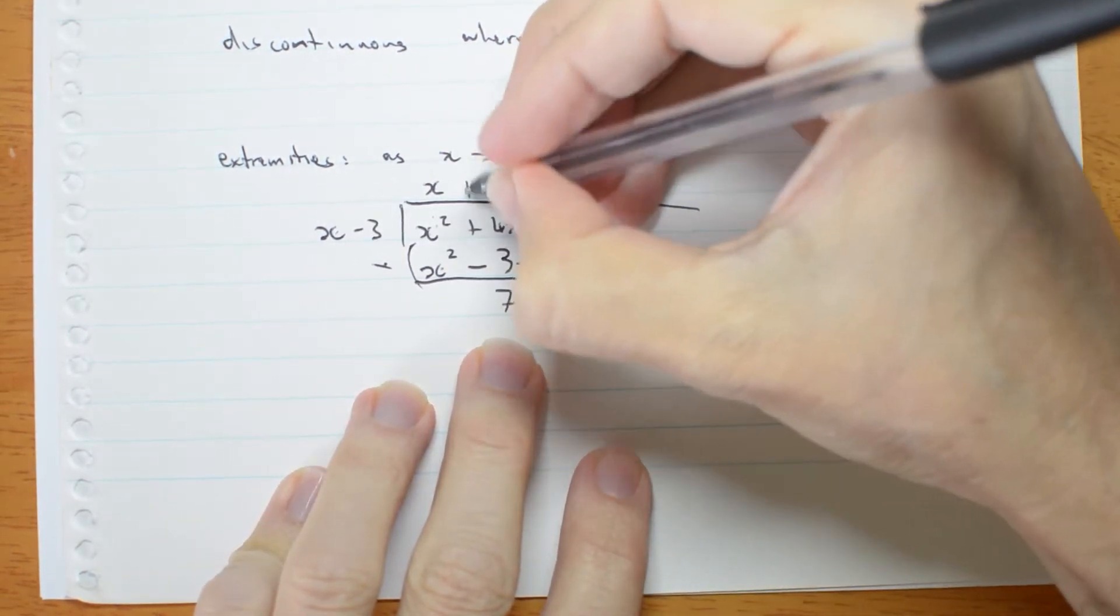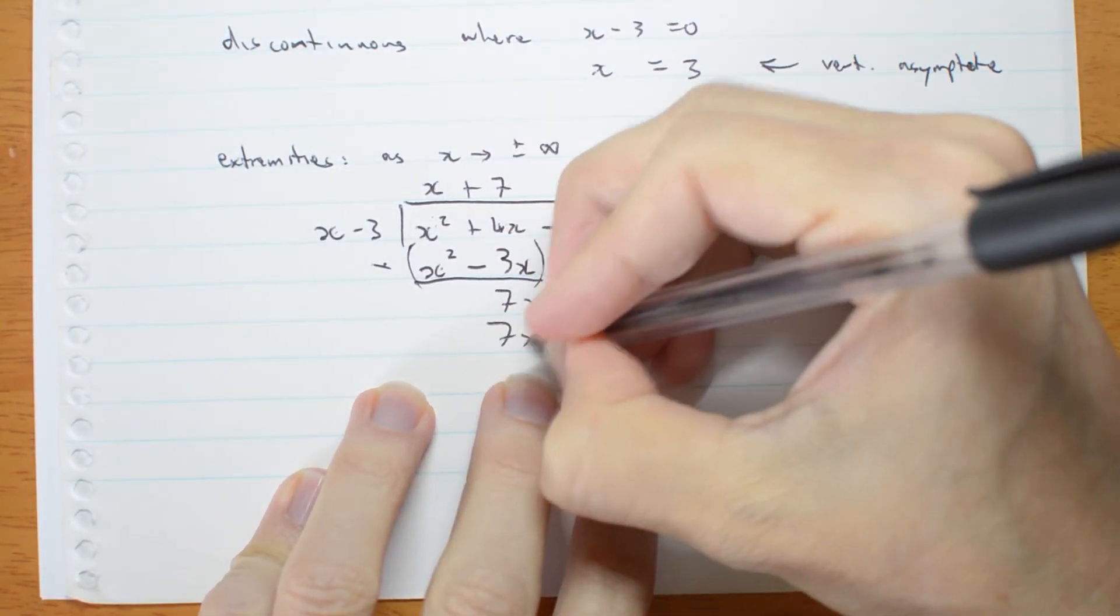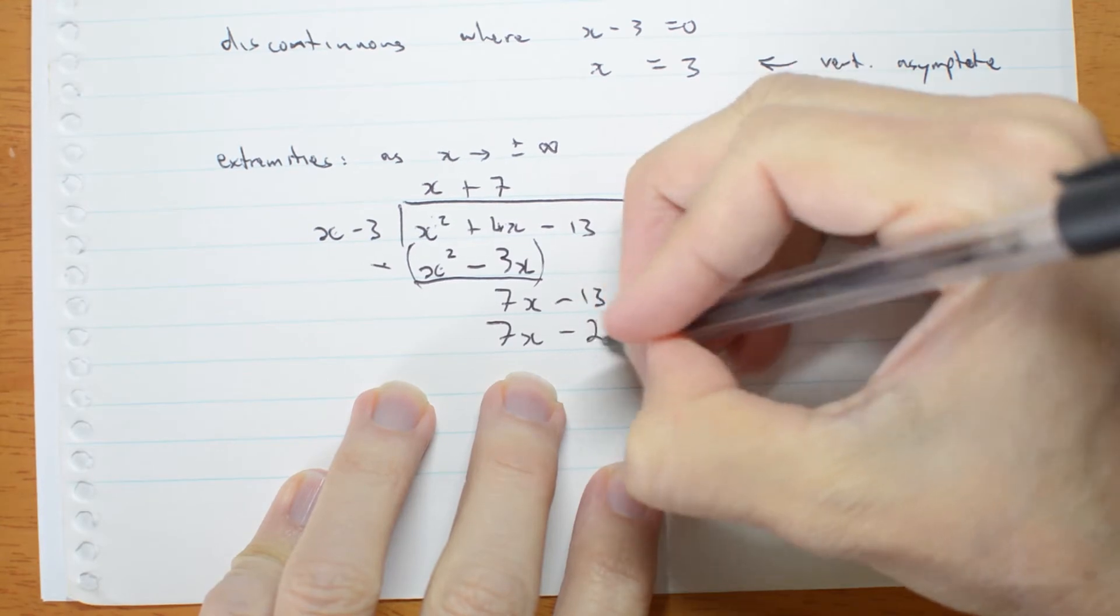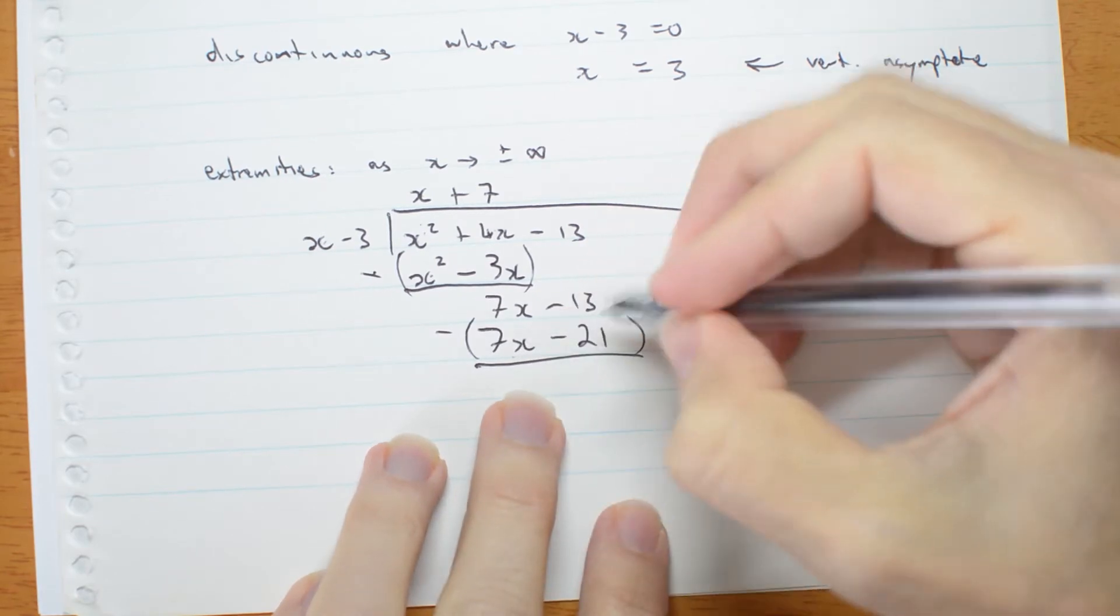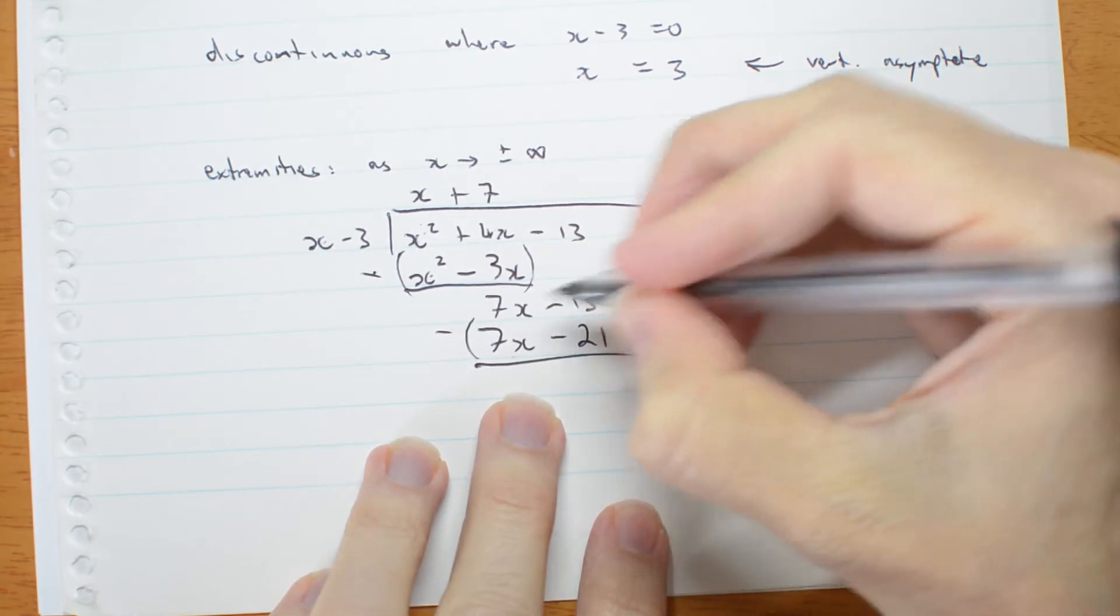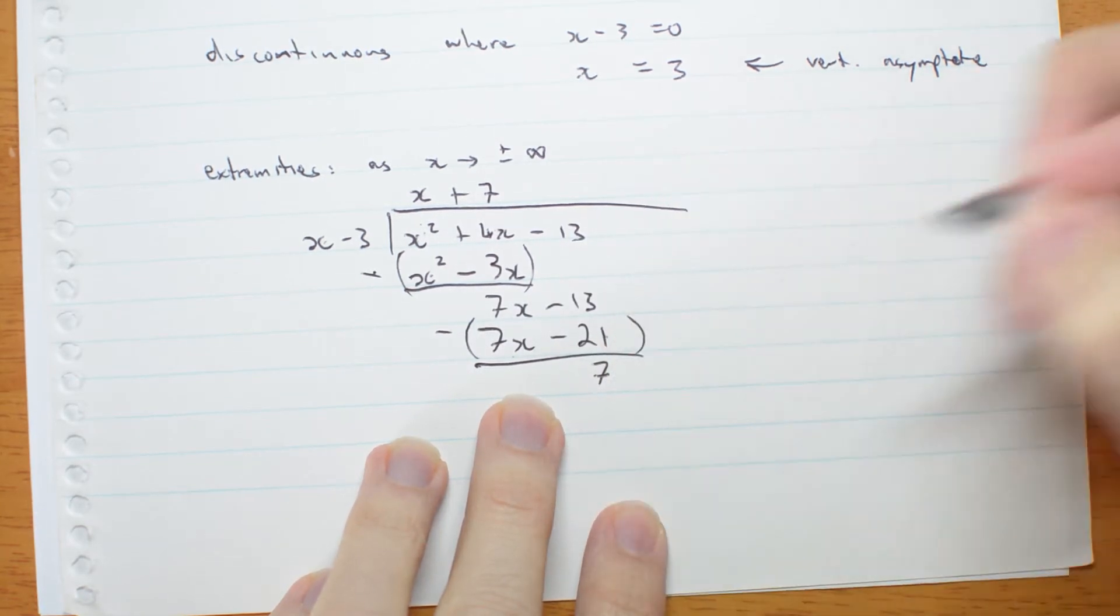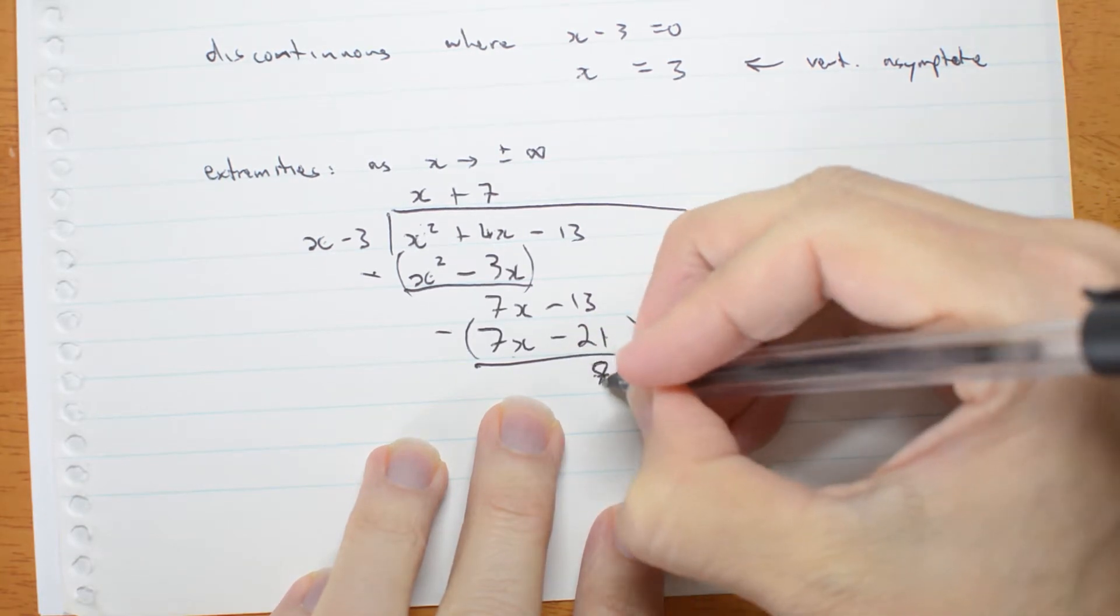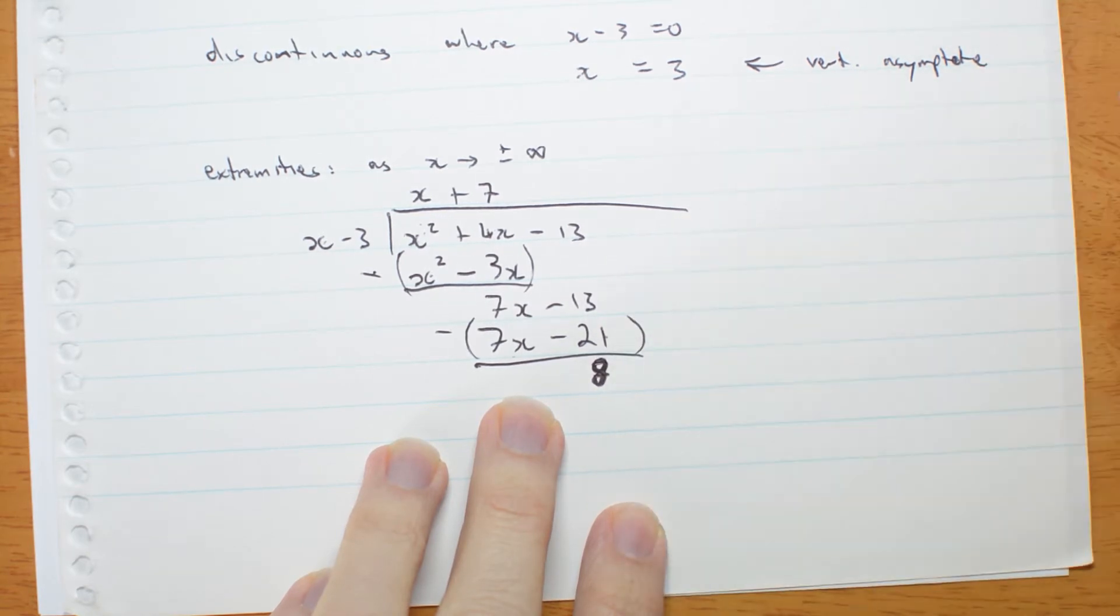x goes into 7x, 7 times. That's 7x. x times 3 is 21. Subtract. That goes away, it's what I wanted. Negative 13 minus negative 21 is negative 13 plus 21 is 7. No, it's not. I can't add up. It's 8. I was getting confused thinking that was 14. It's 8. Sorry about that.